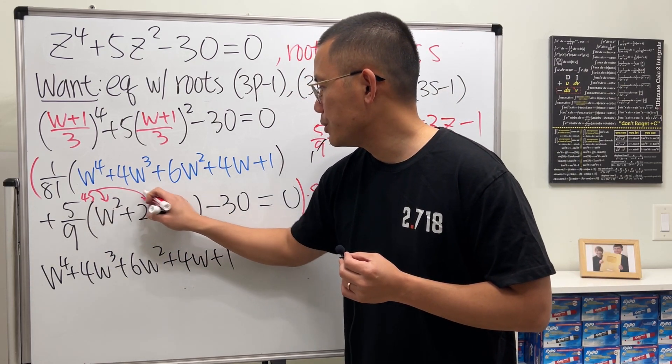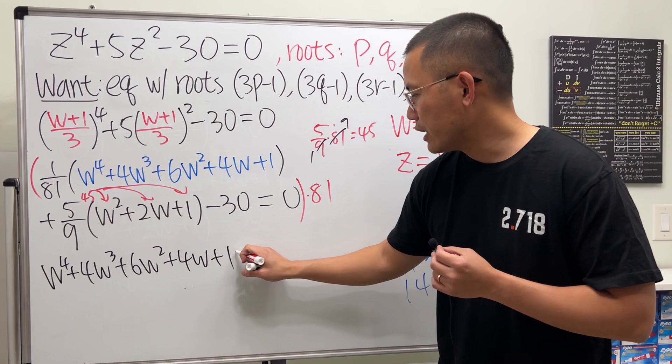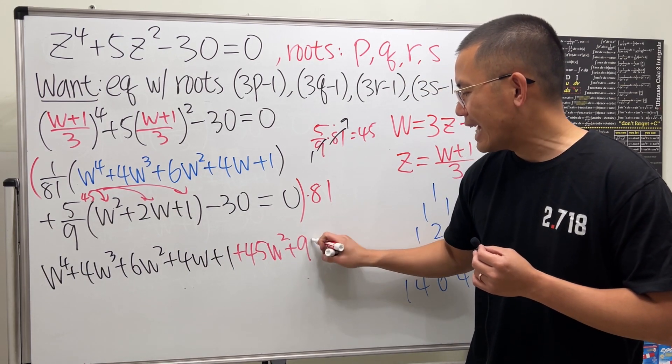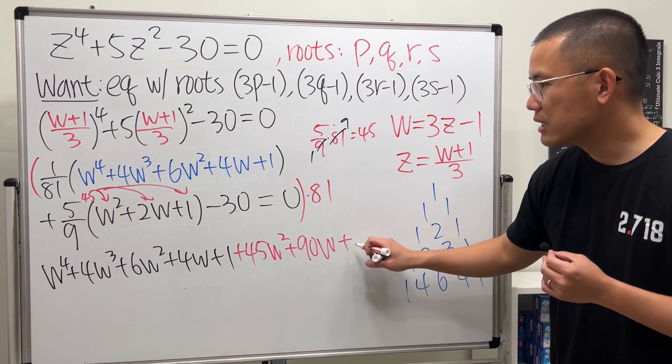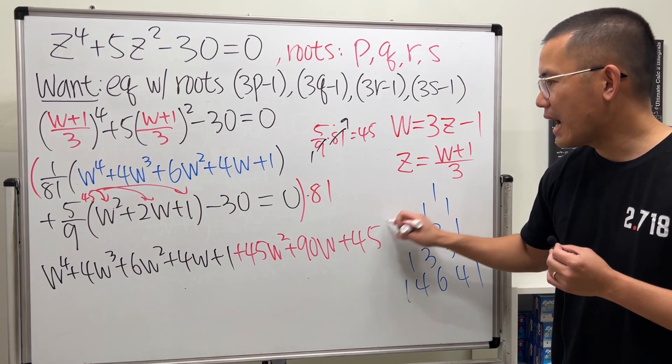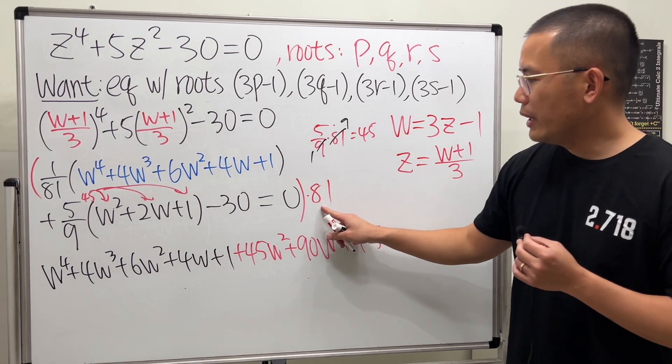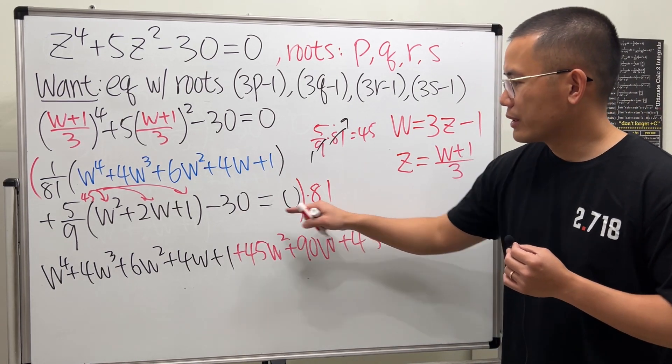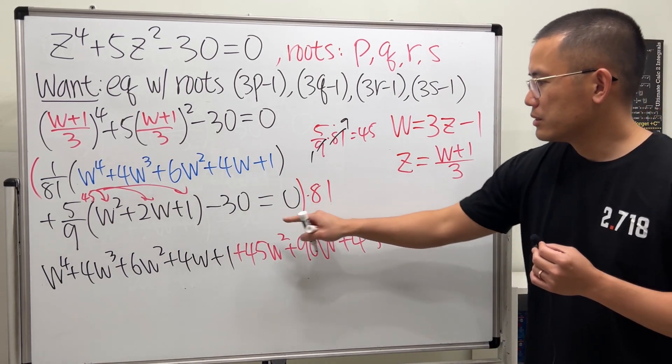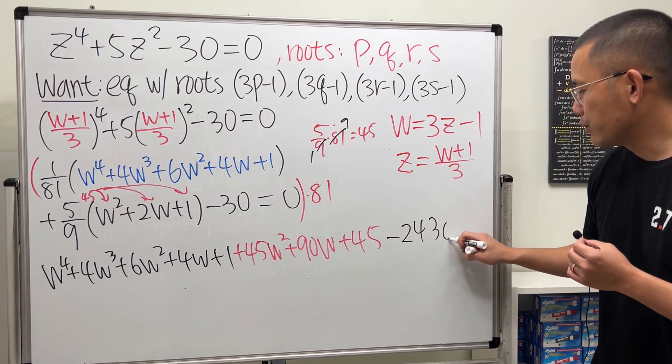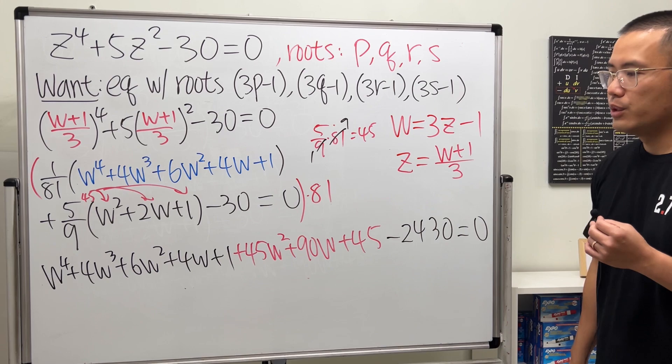So let me just do it real quick. This is 1, this is 9. So 5 times 9 is 45. So really, we are looking for 45 and then distribute inside. So we get plus 45w^2 + 90w + 45. And then lastly, we also do 81 times this. So that will be minus... 3 times that is 2430. And all that is equal to 0.